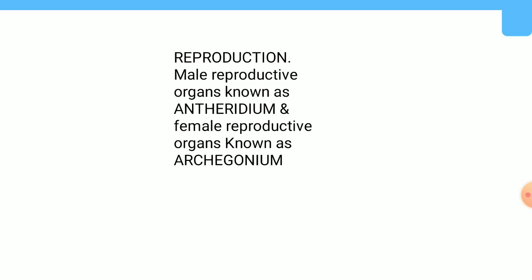The antherozoids fuse with the single egg present in the archegonium and produce a zygote. The zygote is the diploid sporophytic phase. The sporophyte is not free-living; it remains attached to the gametophytic stage and takes nourishment from it. After some time, some cells of the sporophyte undergo meiosis and produce haploid spores, which on germination produce the gametophytic stage.